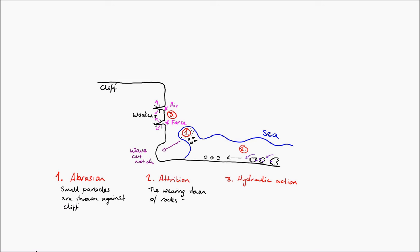So quick recap. As you can see at the bottom I'm writing down what these are very briefly. Abrasion is small particles that are thrown against the cliff. Attrition is the wearing down of rocks to become smaller and rounder. Hydraulic action is all about the force of the wave and the compression of the air inside various weaknesses and cracks.